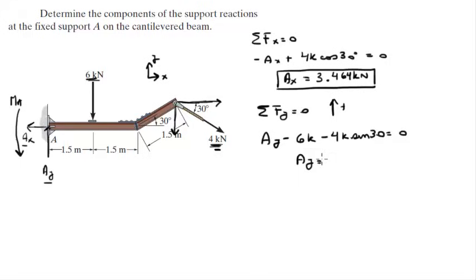So when you solve for Ay, you can see that Ay is equal to 6K plus 4K sine of 30, which comes out to be exactly 8 kN. Nice round number.